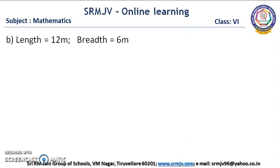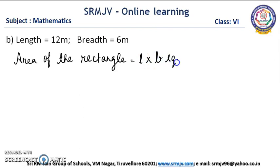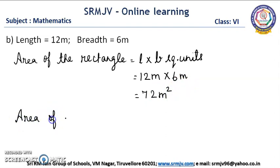Is it clear children? The next one: length of the rectangle is 12 m, breadth of the rectangle is 6 m. First we write the formula: area of the rectangle is equal to length into breadth square units. Now we multiply: 12 sixes are 72, m into m is m square. So the area of the rectangle is equal to 72 m square.